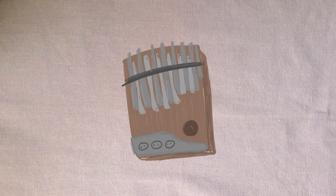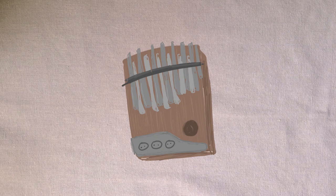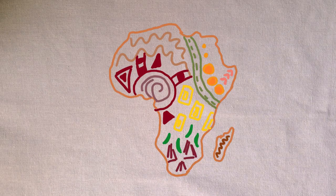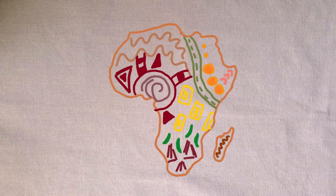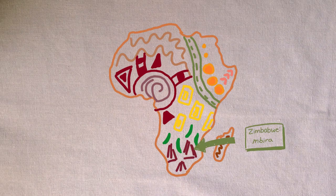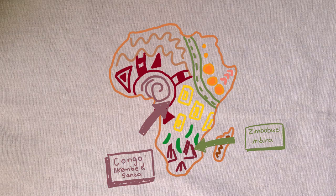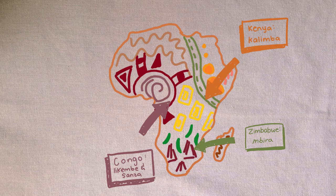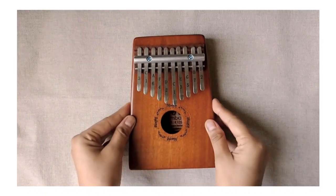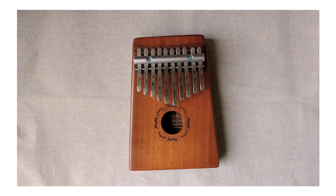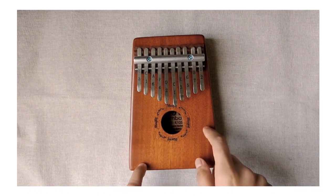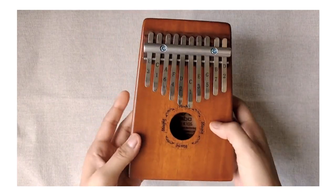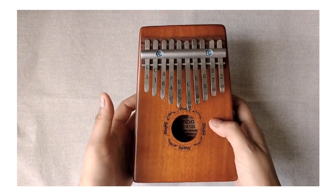A kalimba, or thumb piano, is an African percussion instrument. Many tribes across the continent have developed their own distinctive thumb pianos over time and have given them different names. The instrument consists of a number of keys mounted on a resonator. That is, a device used to make something louder, like a wooden board or a sound box.